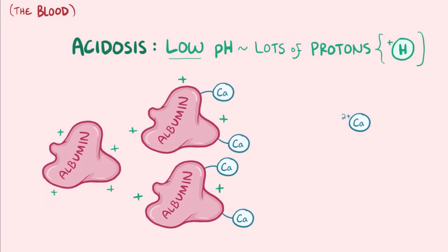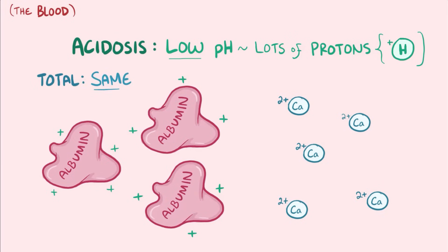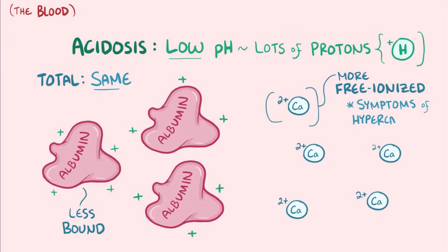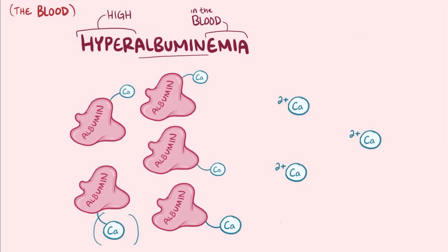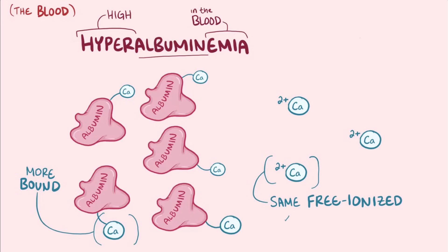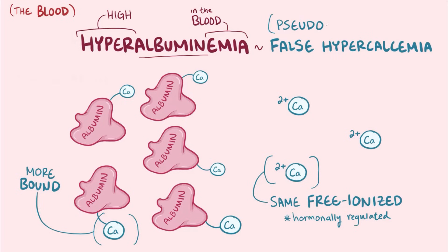So as more protons bind albumin, more free ionized calcium builds up in the blood, and even though total levels of calcium are the same, there's less bound calcium and more ionized calcium — which is important for cellular processes — meaning this can lead to symptoms of hypercalcemia. Also, any condition that results in hyperalbuminemia, or high albumin levels, causes a higher concentration of protein-bound calcium, while free ionized calcium concentrations stay essentially the same due to hormonal regulation. This is therefore called false hypercalcemia, or pseudo-hypercalcemia.